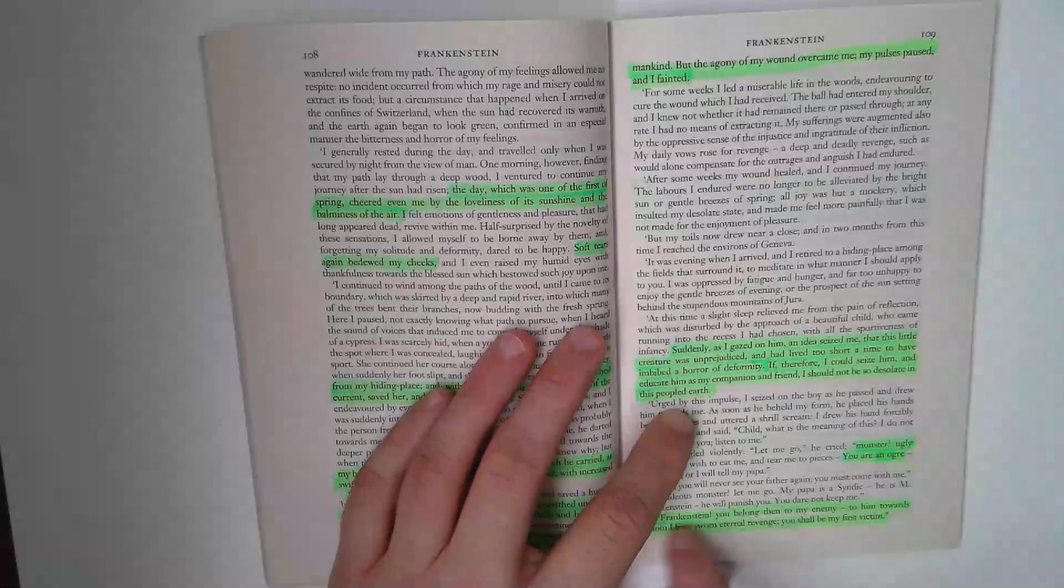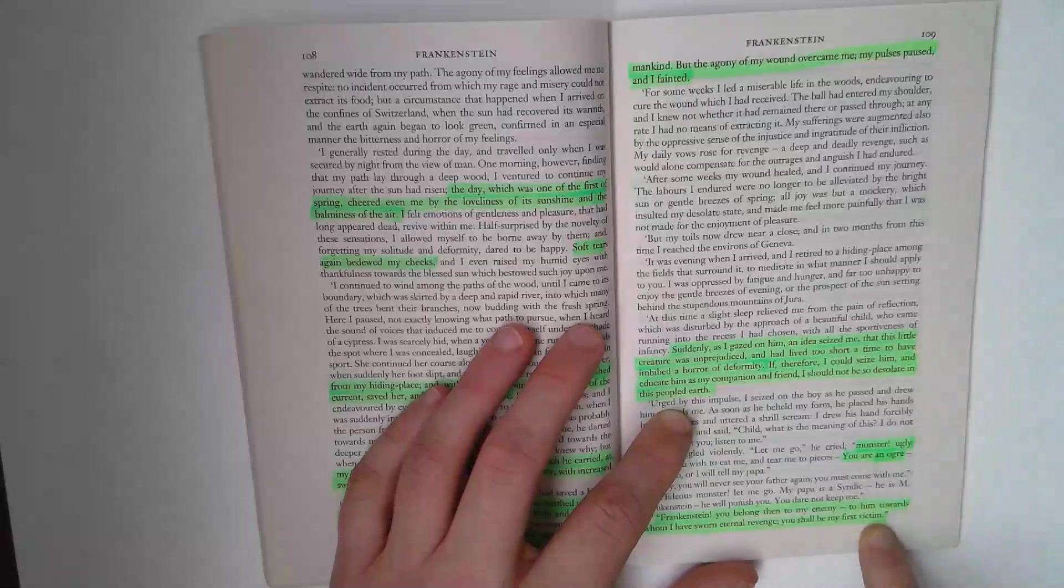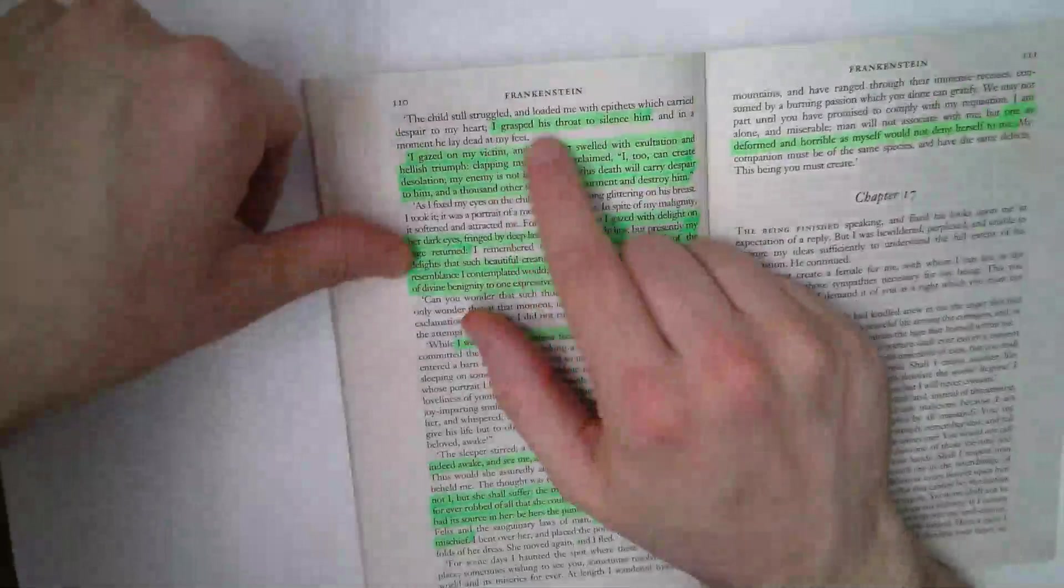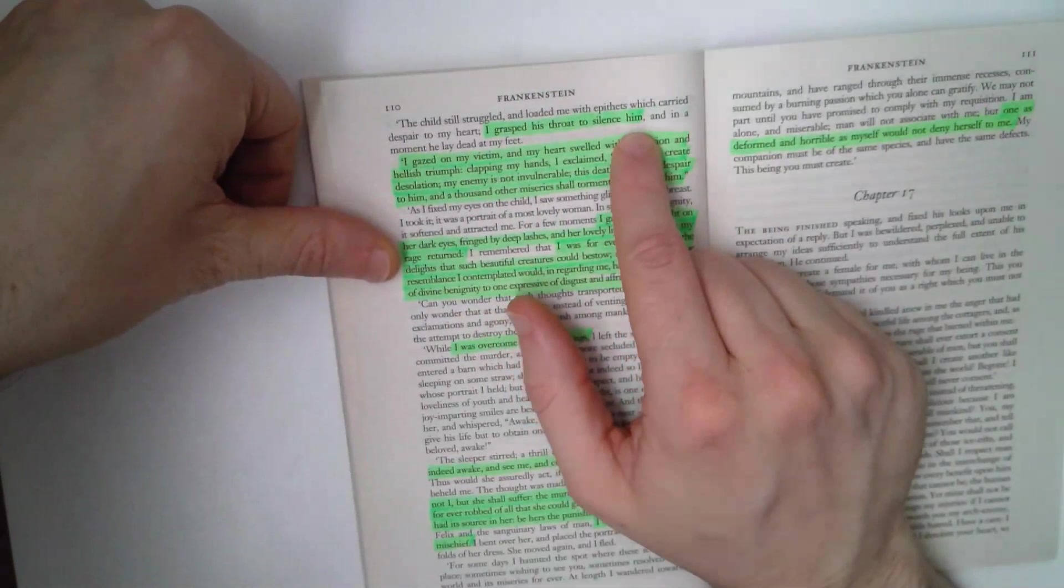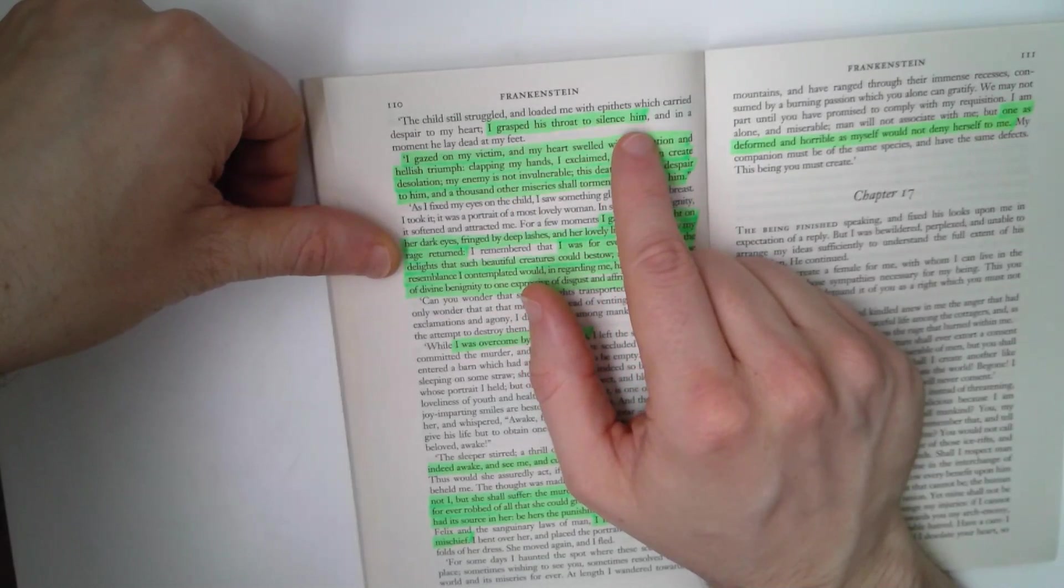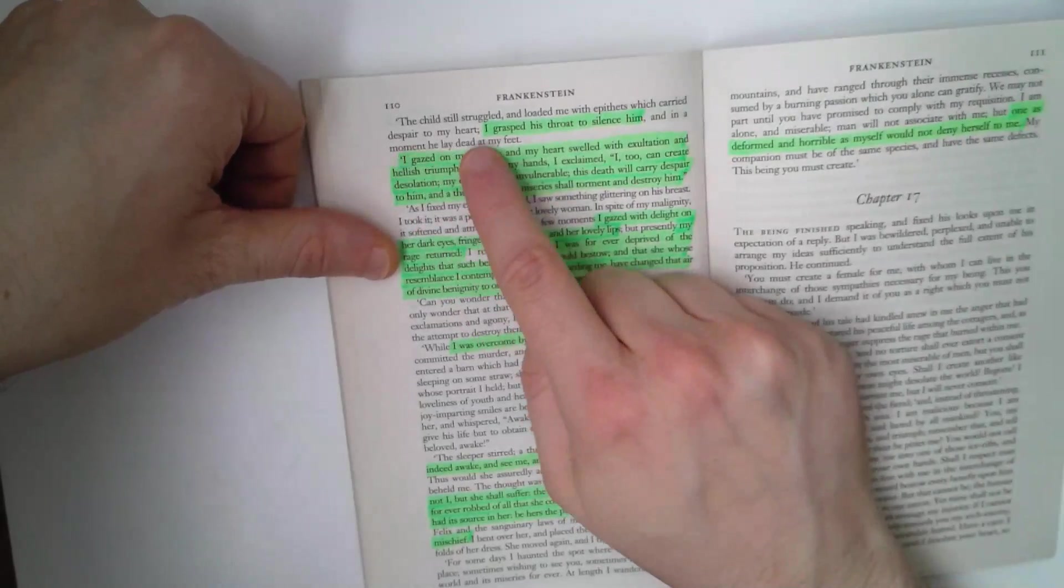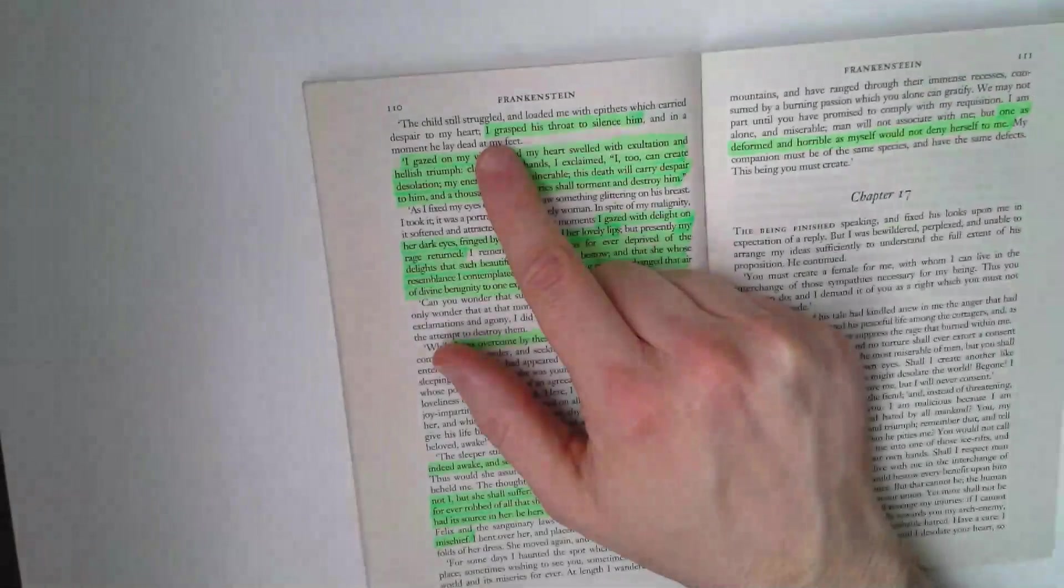And of course, he realizes you're Frankenstein. Frankenstein, you belong to my enemy. To him towards whom I'm sworn eternal revenge. You shall be my first victim. And the creature murders William. Grasped his throat to silence him. And even the murder is ambiguous. Is it the fact that he's trying to just shut William up from screaming for help? Loaded me with epithets which carried despair to my heart. Is it this idea he's trying to stop him from speaking?